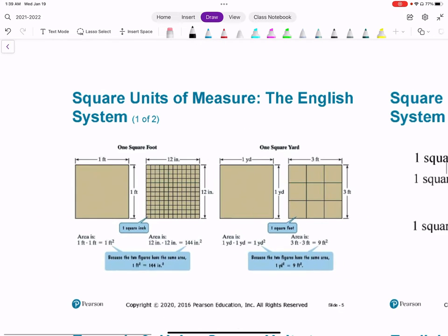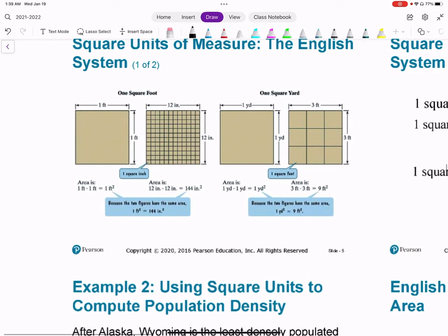Square units of measure. So 1 foot is the same as 12 inches. The area for this one is 1 times 1, so 1 foot squared. But in inches, it's 12 by 12, so 144 inches squared. Same with the yard. 1 times 1 is 1 yard squared. And then if we put it in feet, there's 3 feet in a yard. So it'd be 3 by 3, which makes 9 feet squared.